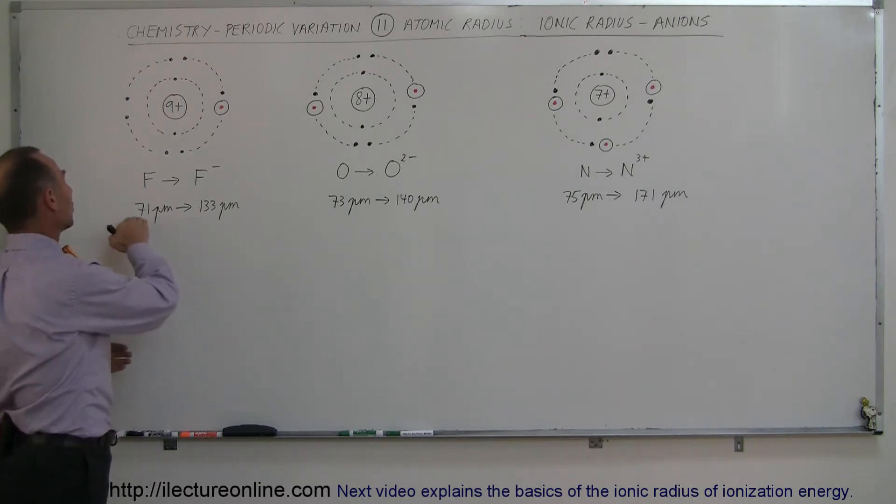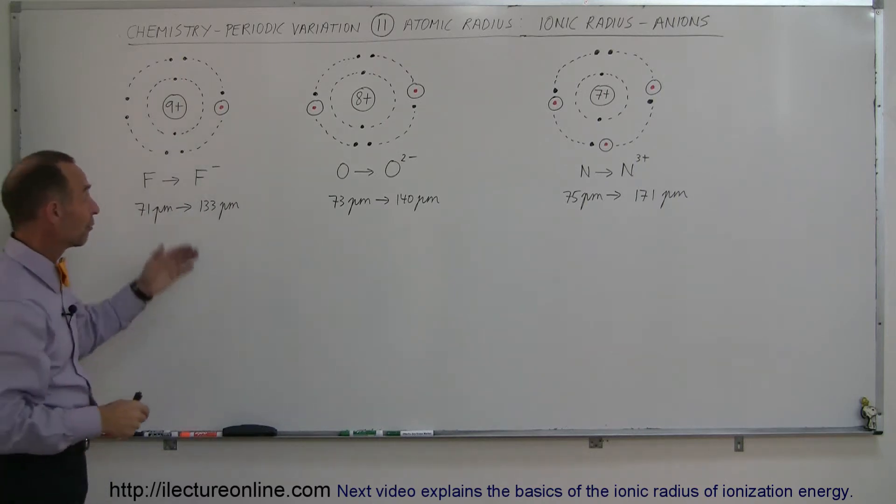They push each other out, and so the initial radius of 71 picometers for the atom becomes 133 picometers for the ion. You can see a tremendous increase in the size.